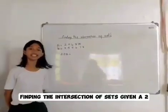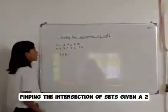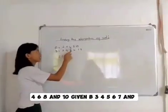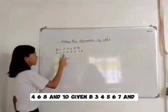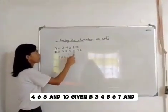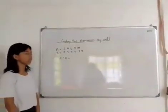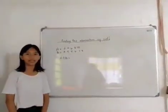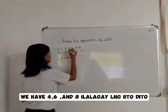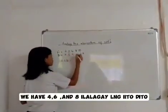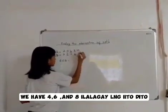Finding the intersection of sets. Given A: 2, 4, 6, 8, and 10. Given B: 3, 4, 5, 6, 7, and 8. Para mahanap ang intersection, kailangan natin hanapin ang magkakaparehas na number. We have 4, 6, 8.